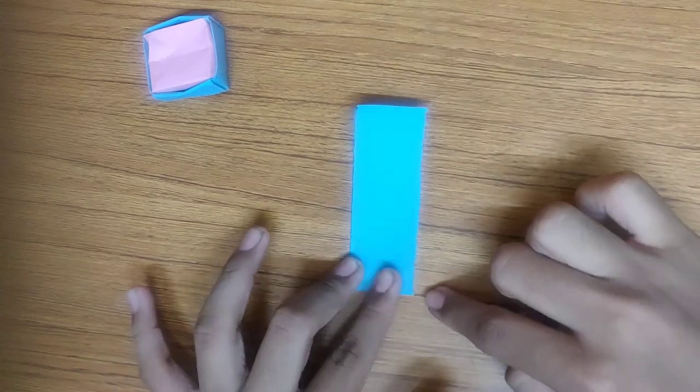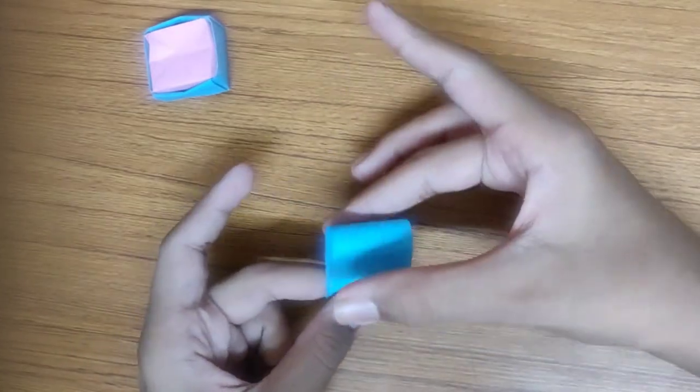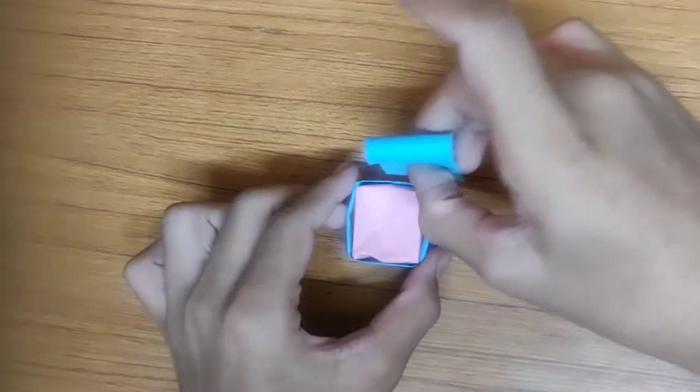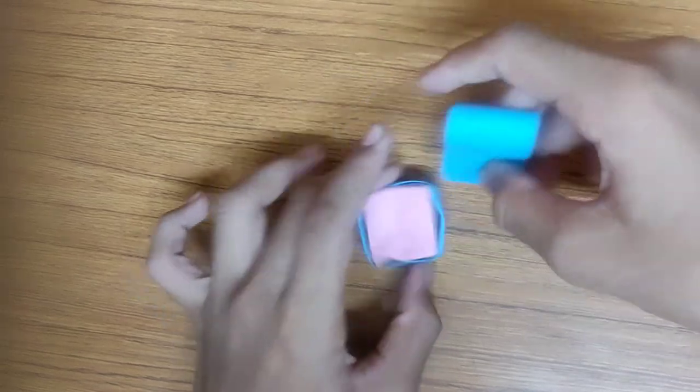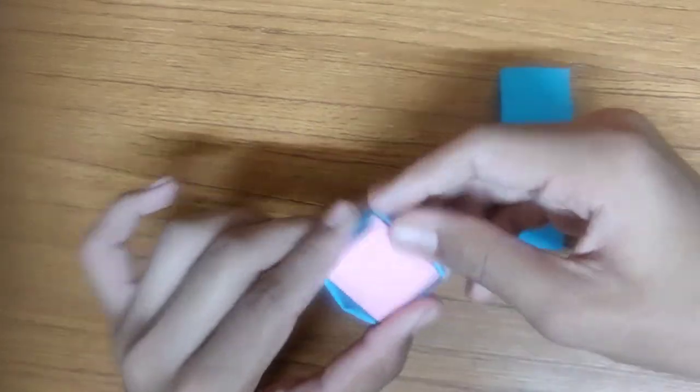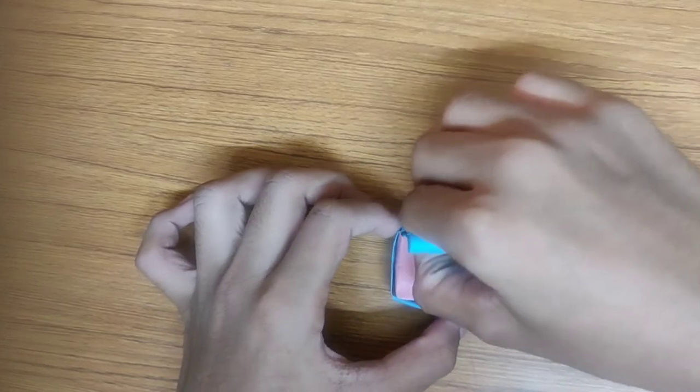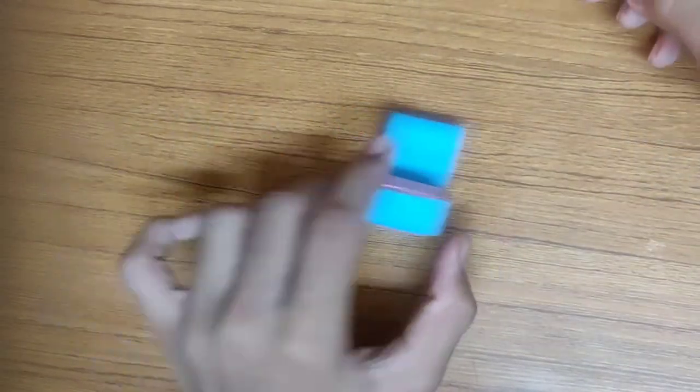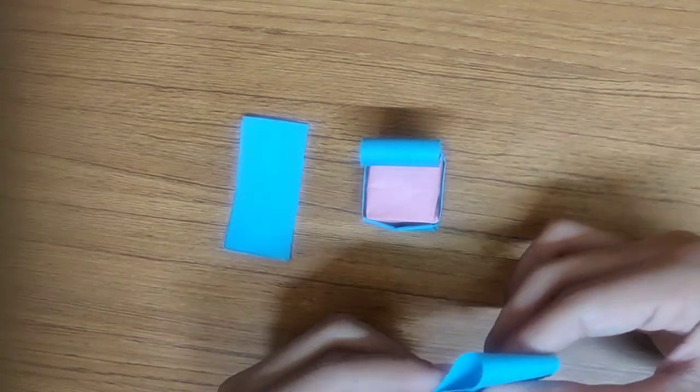So this is a strip of paper of measurements 3 centimeters into 8 centimeters. So we can just fold it into half. So you are not supposed to crease it here. We can now take this box. You can see a gap in the corners, right? We can just insert it there. Like this. So I'm just adjusting it a little bit. And then now we can fix it. Like this. So I have two more strips. These are equal and their measures are 3 centimeters into 6 centimeters. So both are the same measurements.